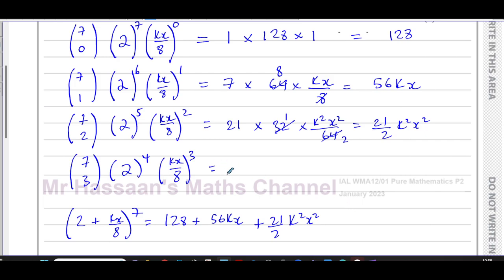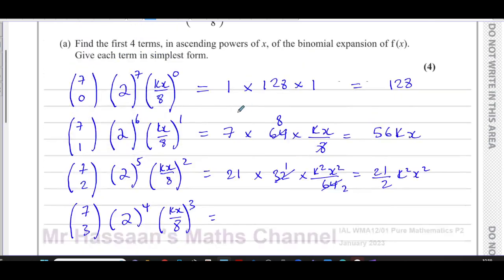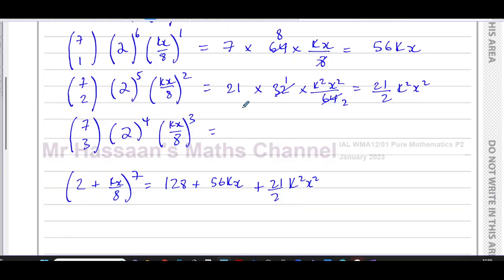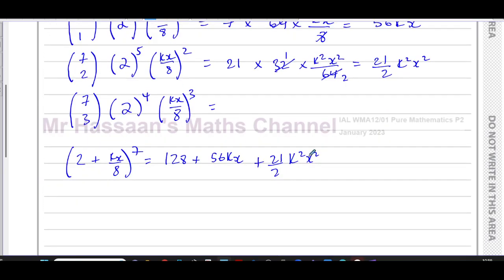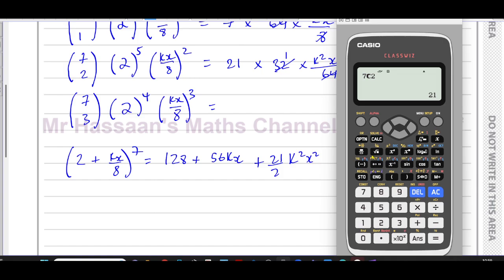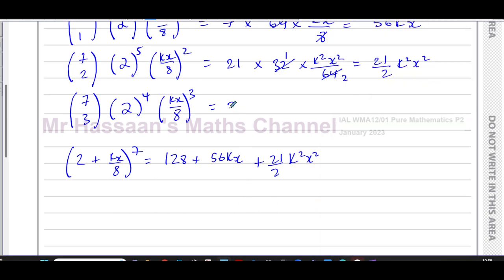And then for the fourth term, which is where we have to stop here, because it asked us to find the first four terms only, we could go on if we wanted to, but they only want the first four terms, I'm going to have 7c3. So we're going to use the calculator for that again. So I'll put 7c3, which is 35.